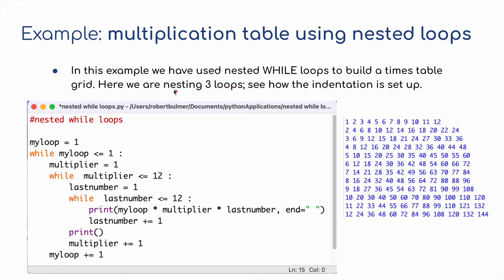In the next example we've got a nested while loop to build a times table grid, using three nested loops. `my_loop = 1`, then while `my_loop <= 1`, `multiply = 1`, then while `multiplier <= 12`, `last_number = 1`, and while `last_number <= 12` we do some counting — print `my_loop` times `multiplier` times `last_number`. Then `last_number += 1` as our counter.